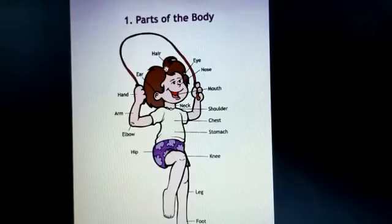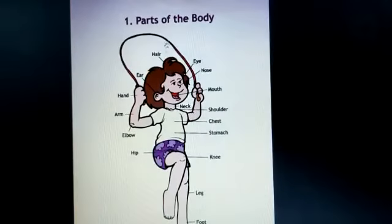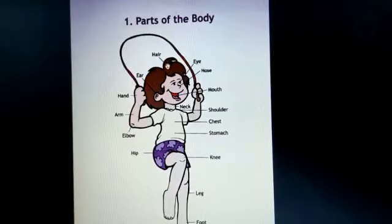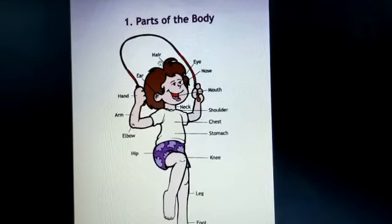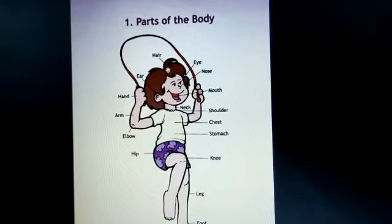Okay students, let's start the first lesson of your book: parts of the body. We will start from the top. This is called hair. Repeat after me, hair. Spelling h-a-i-r, hair. Repeat, h-a-i-r, hair.